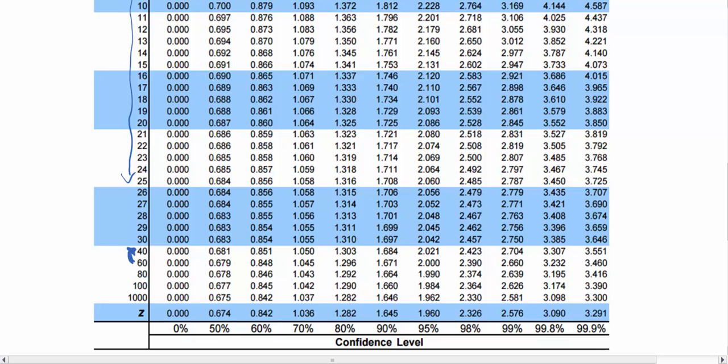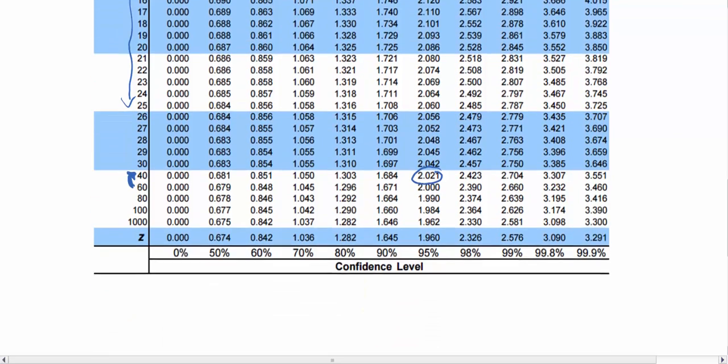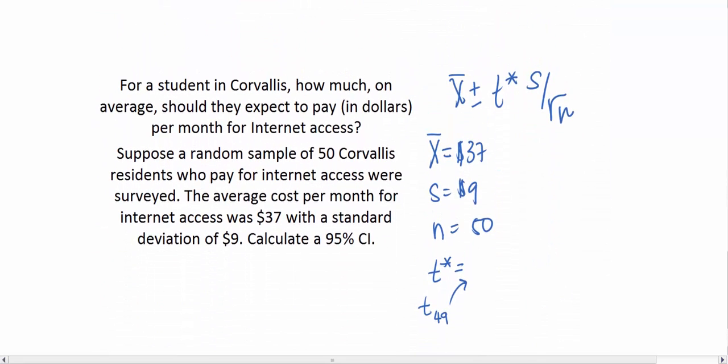We're going to match up this row with the 95% column for confidence level. We find our T critical value is 2.021. So if we scroll back down, we know that this is 2.021.